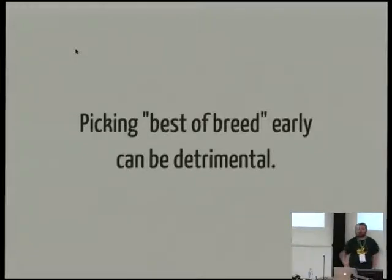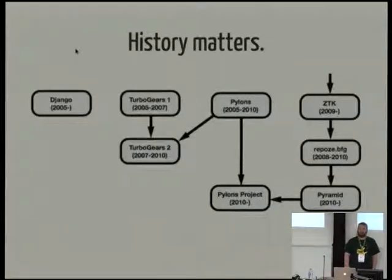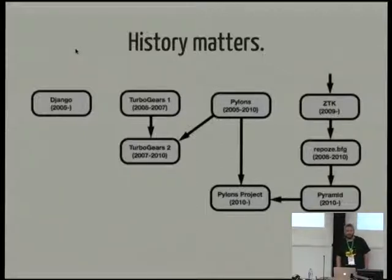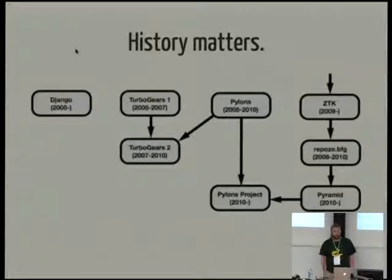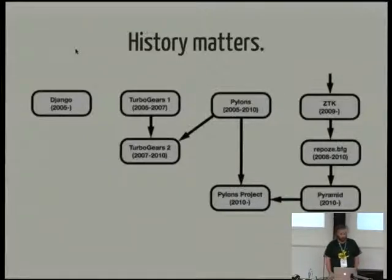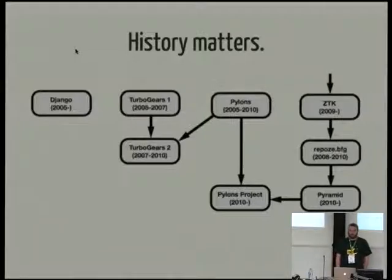Picking best-of-breed early can also be detrimental. Turbogears 1 was originally released in 2005, pretty much when Django was open-sourced. Being a best-of-breed framework, it used SQLObject as a database layer, KID as a templating engine, and CherryPy as a routing engine. Turbogears 2, released in 2007, changed almost every single one of these components to SQLAlchemy, Genshi, and Pylons. As a result, it was effectively a completely different project — migrating from Turbogears 1 to 2 was a major problem. It really wasn't a version upgrade; it was a rewrite. Turbogears lost a lot of project momentum, to the extent that it practically killed the project.